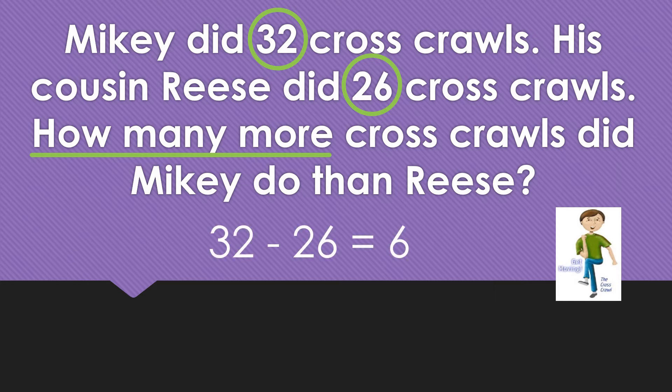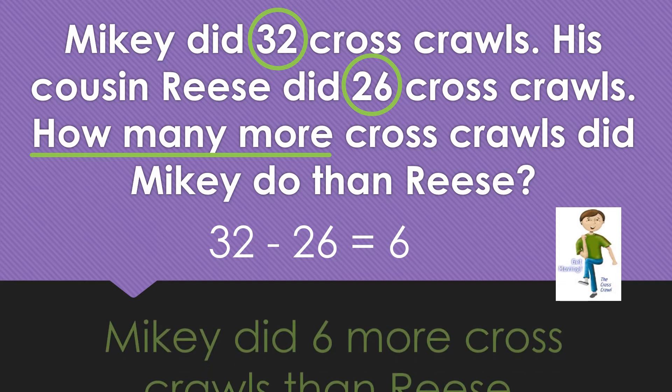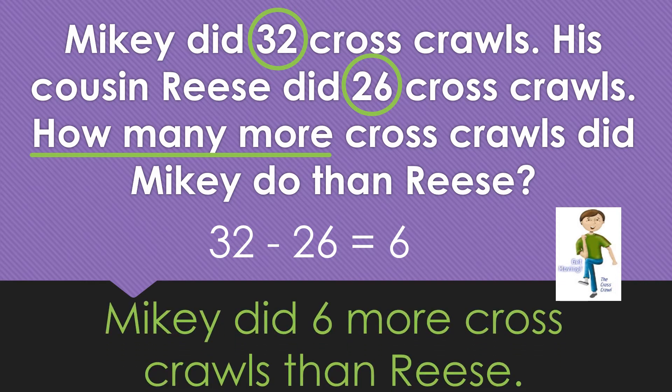32 minus 26 equals 6. My solution sentence is: Mikey did 6 more cross-crawls than Reese. Now you do 6 cross-crawls and we'll move on to the next problem.